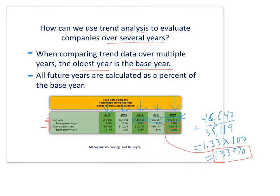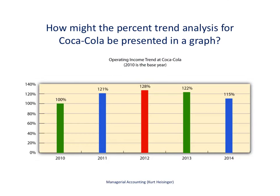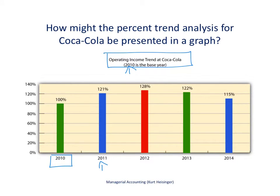Next we look at a bar graph that presents the trend analysis percentages for operating income. Trend analysis information can be presented in the form of a bar graph — this is the operating income trend for Coca-Cola. With 2010 as the base year at 100%, the other years' operating income are divided by the base year's operating income. You'll see 121% for 2011, 128% for 2012, 122% for 2013, and 115% for 2014 — a nice way to see what's happening with operating income over the course of five years.